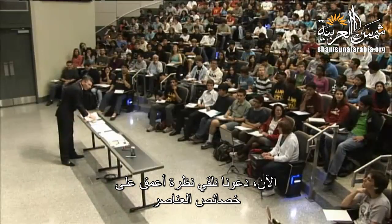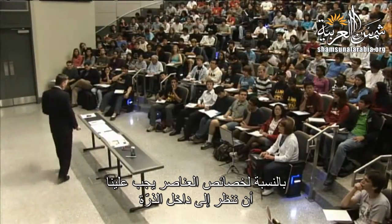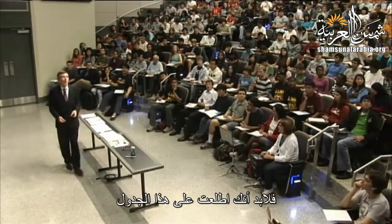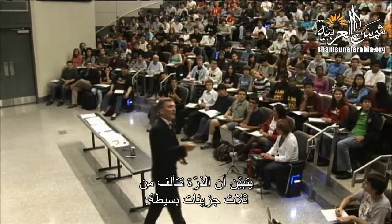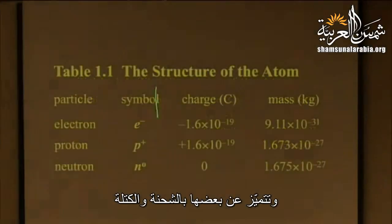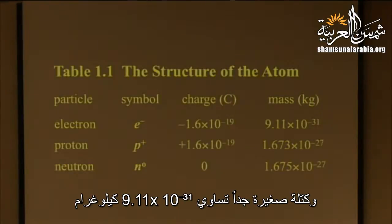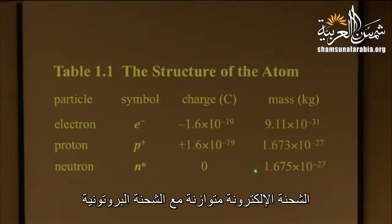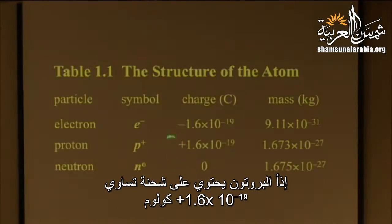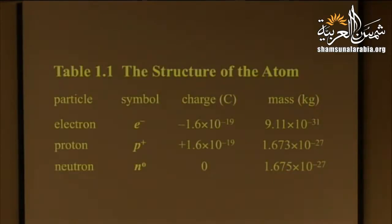To understand the properties of the elements, we need to look inside the atom. At a first pass, we deconstruct the atom into three simple particles: the electron, the proton, and the neutron, with symbols e, p, and n. They're distinguished by charge and mass. The electron has charge −1.6×10⁻¹⁹ coulombs and mass 9.11×10⁻³¹ kg. The proton has charge +1.6×10⁻¹⁹ coulombs, balancing the electron so the atom is net neutral. The neutron has zero charge. The proton and neutron have very nearly equal masses.